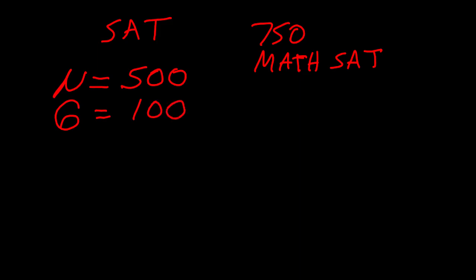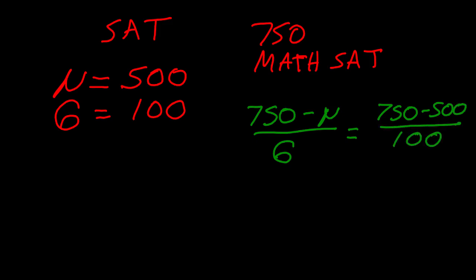You may recall that to convert 750 to a Z-score, we're going to take 750 minus the mean, divided by the standard deviation, which is equal to 750 minus 500, divided by 100, for a Z-score of 2.5.